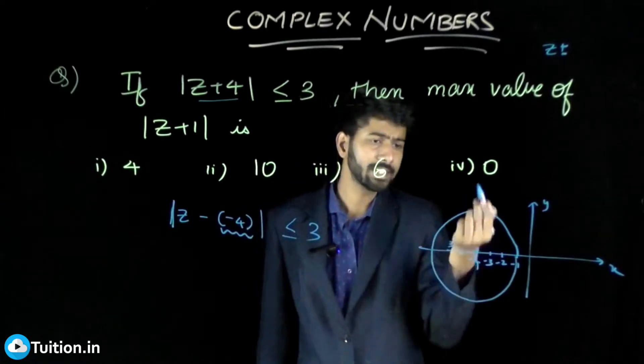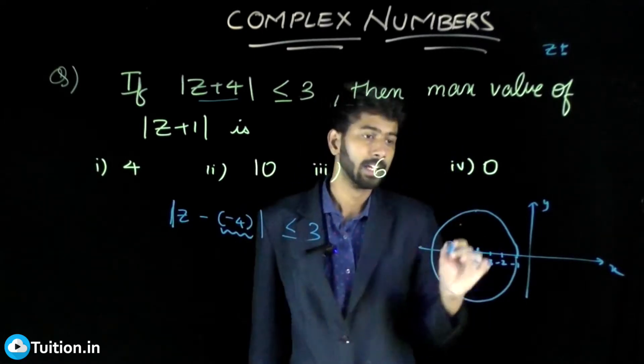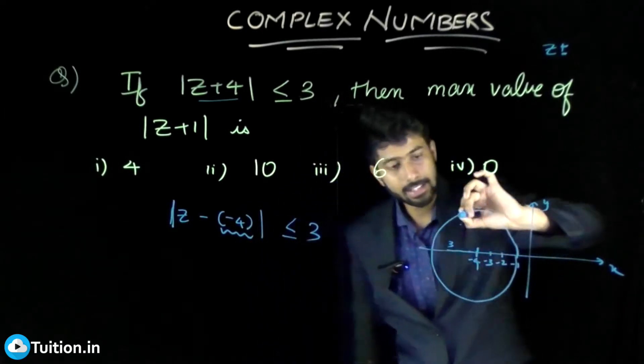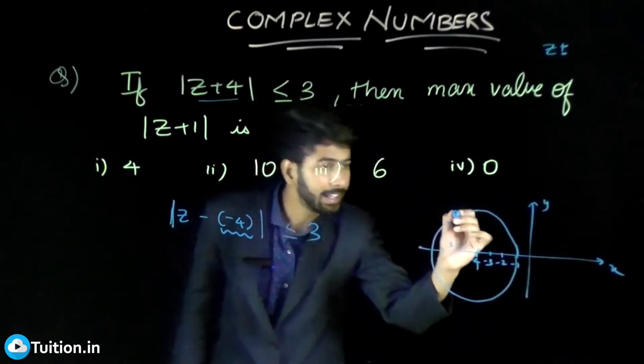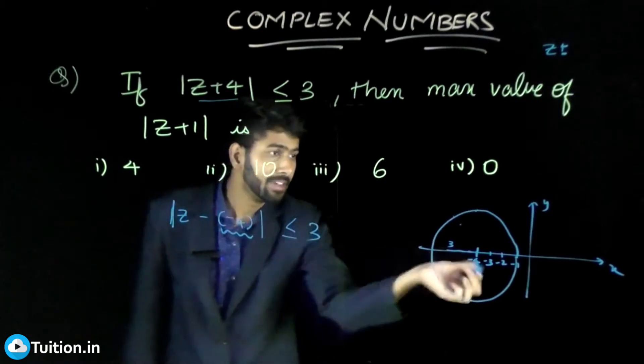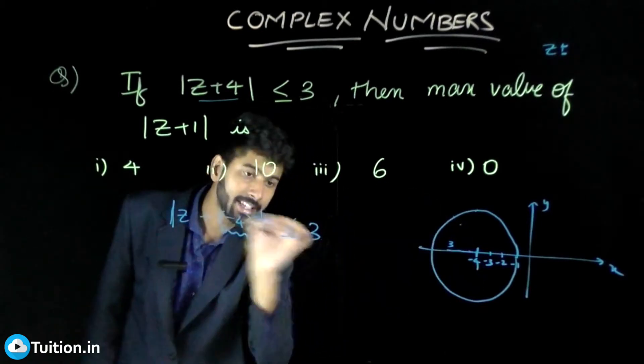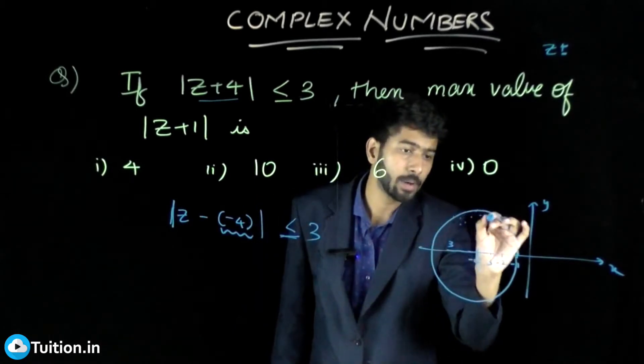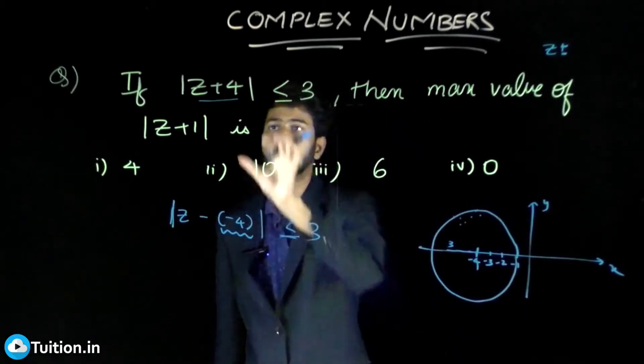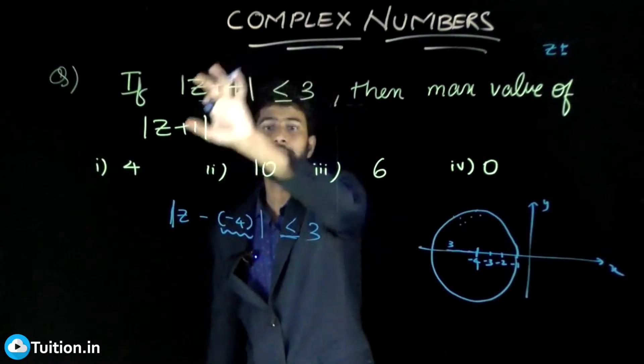Because for example if I take this z here, the farthest that z can be from minus 4 is 3. If I take anything less than that, even then the condition would be satisfied because less than 3 is also allowed. That means the collection of all these points inside the circle is basically what this condition will give you.